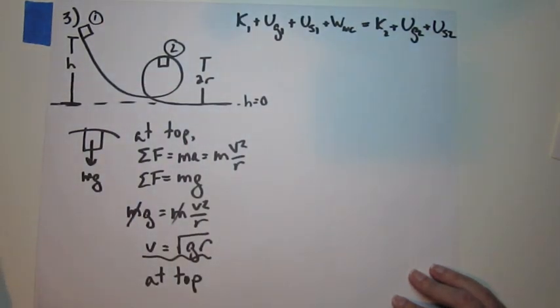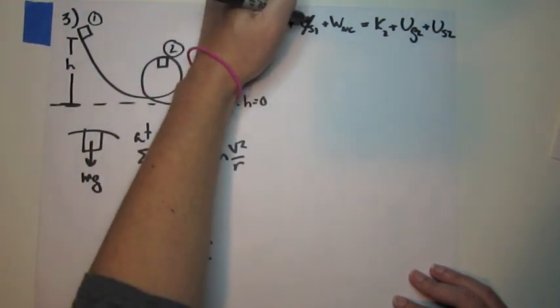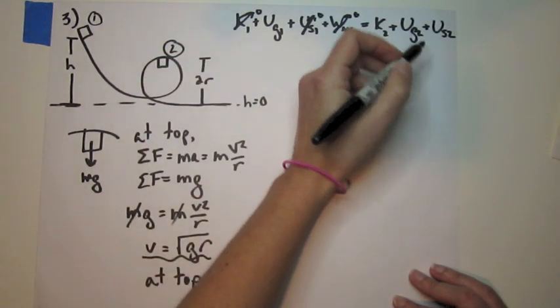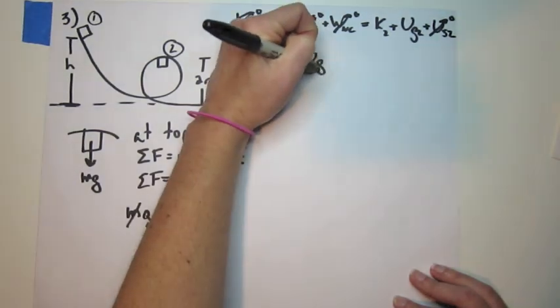And now we're going to think about what we can get rid of. At time one, it's not moving, but it is at a height above zero. There's no spring, there's no work done by friction. At time two, it is moving, it is at a height above zero, but there's still no spring. And so I'm left with Ug1 equals K2 plus Ug2.